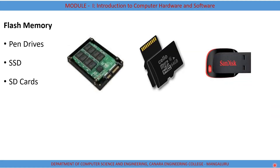Flash memory: flash drives are removable, re-writable, and physically much smaller drives, weighing maybe less than 30 grams. Around 2010, USB flash drives had a storage capacity of around 256 GB. Such devices are a good substitute for floppy disks or CD-ROMs, as they are smaller, faster, have thousands of times more capacity, and are more durable and reliable.